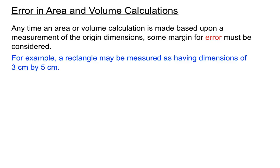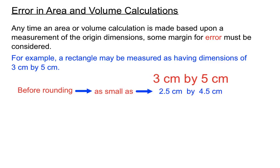For example, if we measure a rectangle as having dimensions of 3cm by 5cm, let's consider what margin for error we might like to account for. Before rounding off to 3cm and 5cm, we could have had dimensions as small as 2.5 that got rounded off to be 3, and the second dimension could be as small as 4.5 if it then got rounded up to be 5cm. Those are the smallest original dimensions we could have had before rounding off to whole numbers.